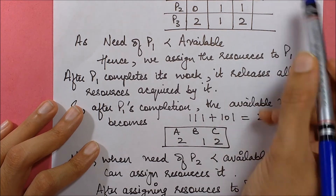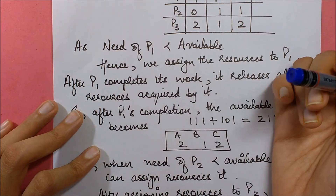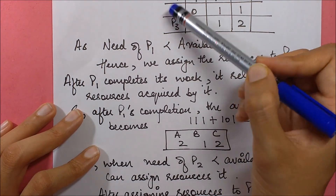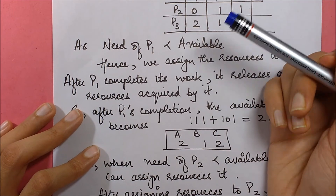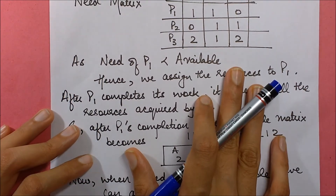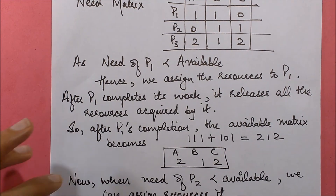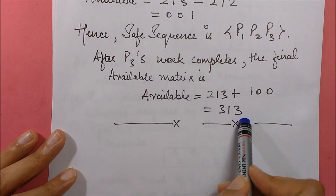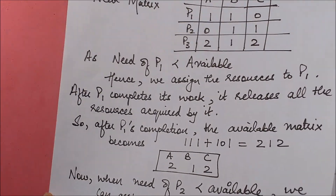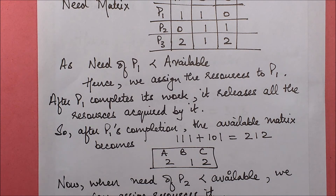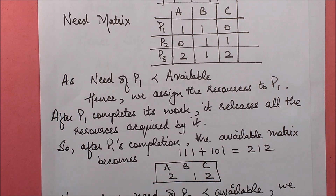We can finally give the resources to P3, so we have one safe sequence: P1 → P2 → P3. Another possibility is P1 → P3 → P2, and yet another is P2 → P1 → P3. There are multiple safe sequences in this case. At the end you'll be left with available as [3, 1, 3]. That's all for this question on the Banker's Safety Algorithm. More numericals from a GATE perspective are coming in the next session — thank you.